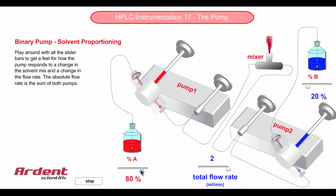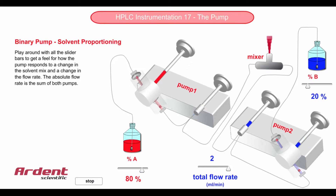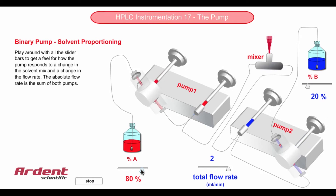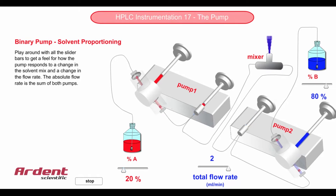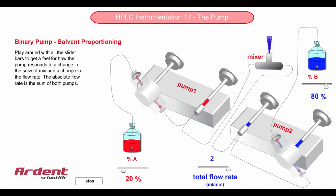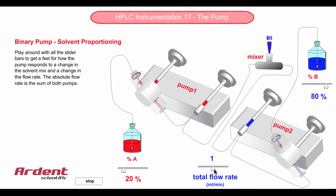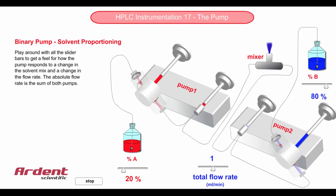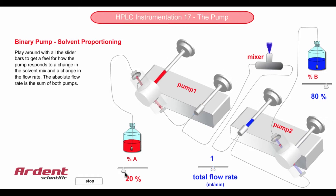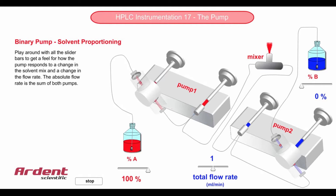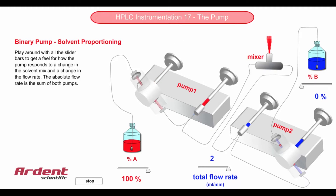If we increase the ratio of solvent A to 80%, we can notice that pump one speed is much higher than pump two to deliver that ratio. In the reverse situation, pump two speed is much higher than pump one to deliver the new ratio. If we need 100% of solvent A, pump one will deliver solvent A while pump two will stop altogether, delivering 100% solvent A.